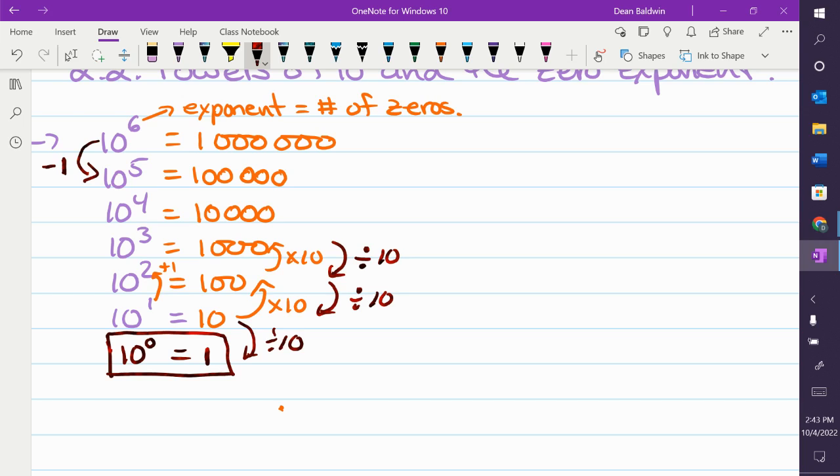So, if I had 3 to the 4. Anybody know what 3 to the 4 is? What's 3 times 3? 9 times 3. Times 3. 81. 3 to the 4 is 81.